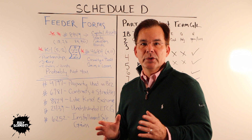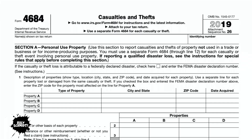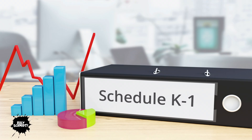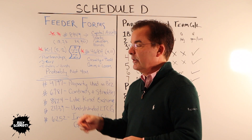The next is Form 4684, and this is for Casualty and Theft Gains and Losses. The next is your K-1, and this is a partnership form, an S-Corp form, or Estates and Trusts form to capture gains and losses held in the estate or trust.